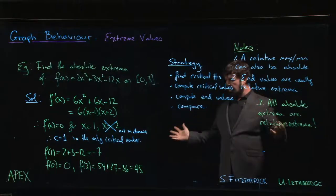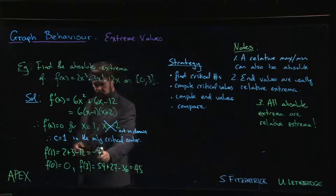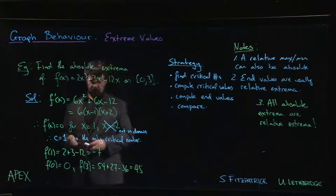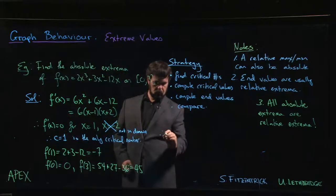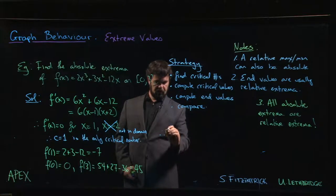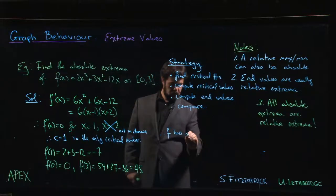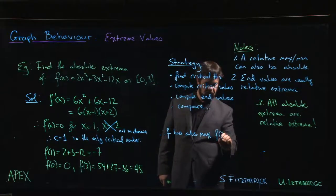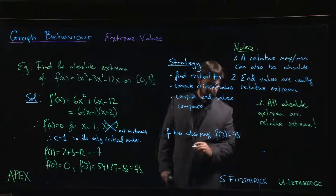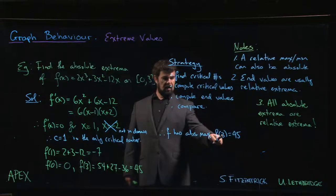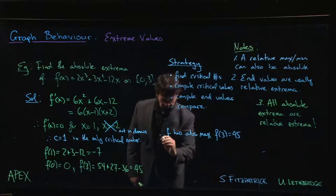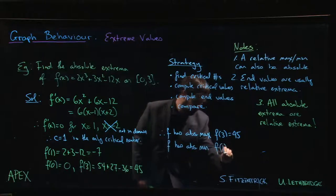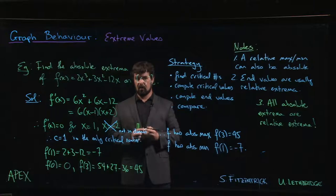We've computed the end values. Now we compare. The comparison is simple: we look at these three values—we see which is the smallest, -7, which is the largest, 45. So we see that f has an absolute max—we could just say 45, but it's usually a good idea to also give the x values where that max and min occur. So f(3) = 45 is the absolute max. Sometimes there's more than one x value that will give you that number; in this case there's only one. And f has the absolute minimum value of f(1) = -7.